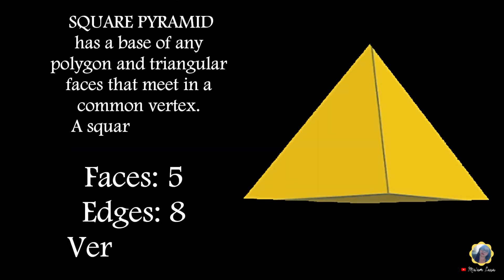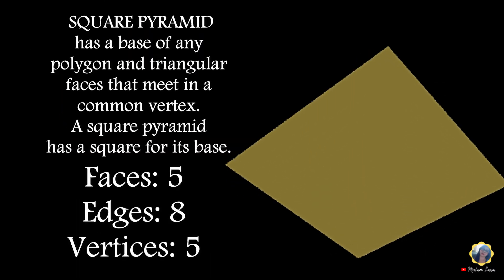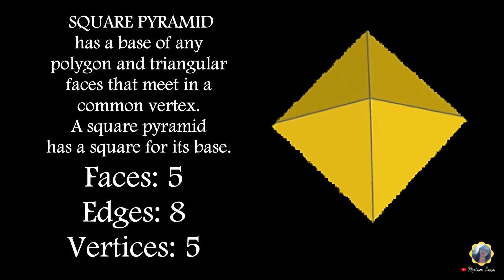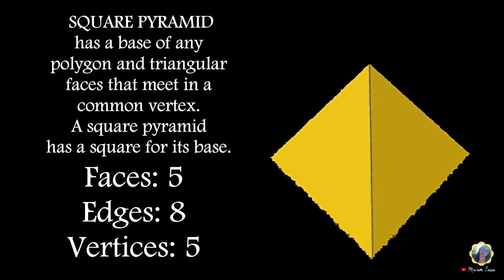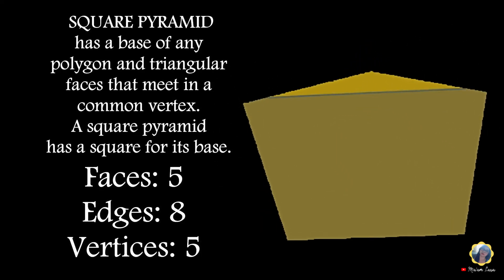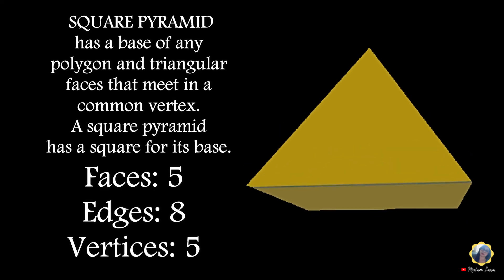Square pyramid: has a base of any polygon and triangular faces that meet in a common vertex. A square pyramid has a square for its base. Faces: 5. Edges: 8. Vertices: 5.